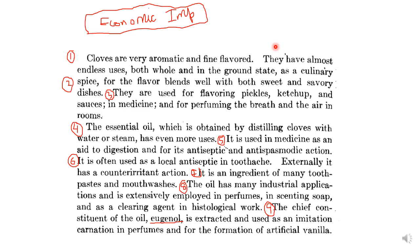The essential oil obtained by distilling cloves with water or steam has even more uses. It is used in medicines as an aid to digestion and for antiseptic and antispasmodic action. It is also used as a local antiseptic in toothache — when people suffer from toothache they take a clove in their mouth and it gives relief. Externally it has a counter-irritant action, and it is an ingredient of many toothpastes and mouthwashes.